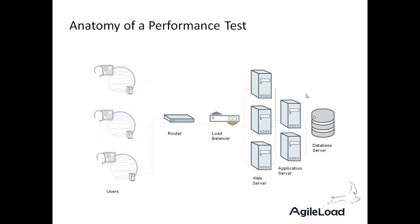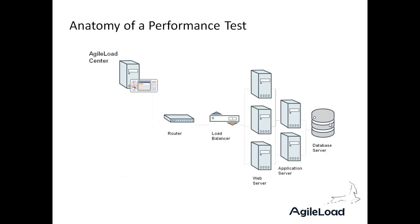So what does a performance test look like? Effectively, we're trying to simulate a number of users going in through the network infrastructure into the application — web servers, application servers, and database. We replace those users with hardware and software: Agile Load Center controls Agile Load injectors. These injectors can run on the same machine as Agile Load Center, or for a particularly large test requirement you might need to distribute that onto several machines, or distribute load around the world to get insight on response times from different network locations.